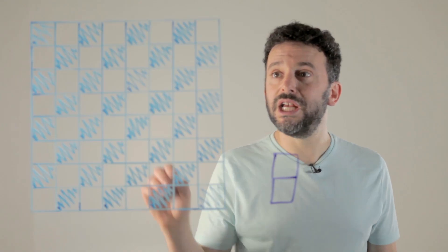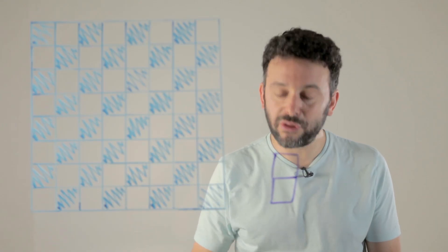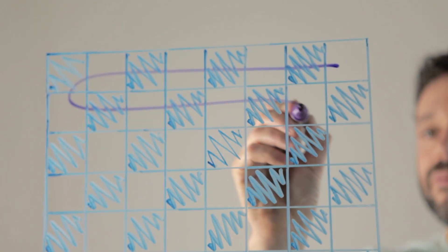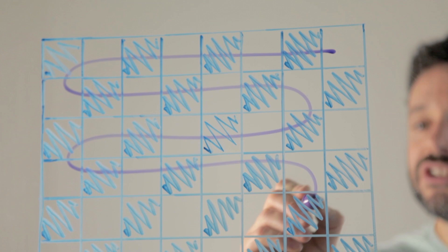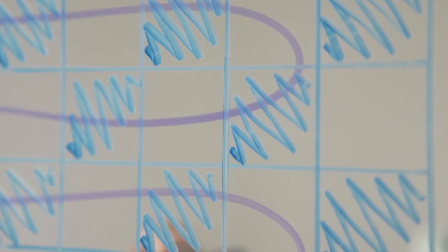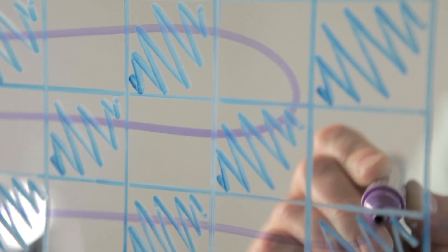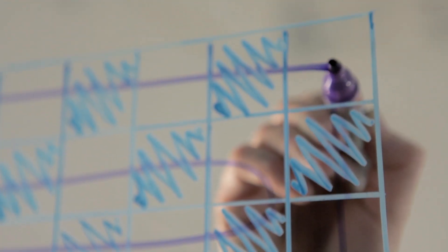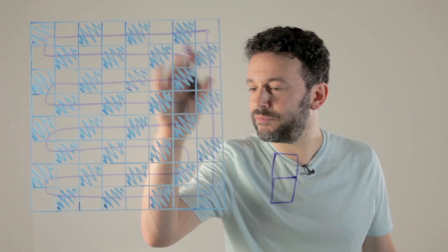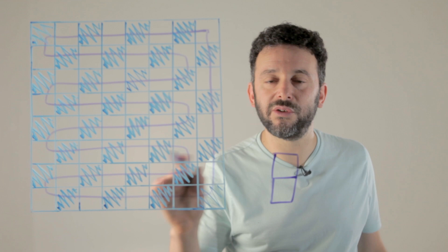Now the way you solve this is slightly different because what we're going to do first is we're going to draw a path through the board that starts here, around the board, touching each square once and then coming back to where we started. Now there are many different paths through the board that touch every square. I'm using this one but it works for all of them.